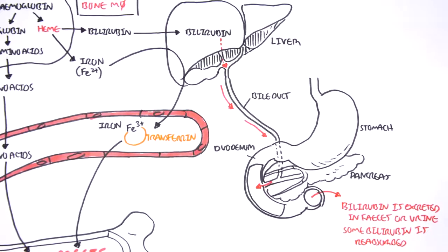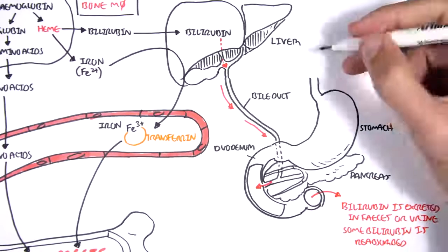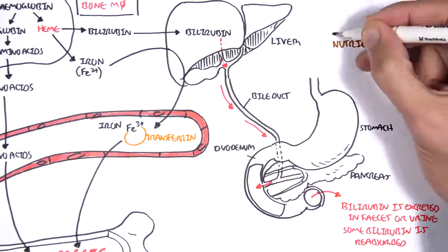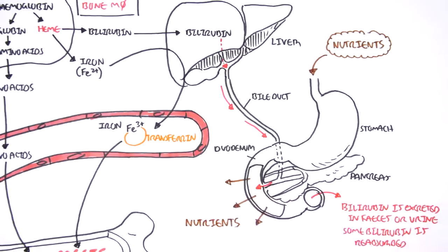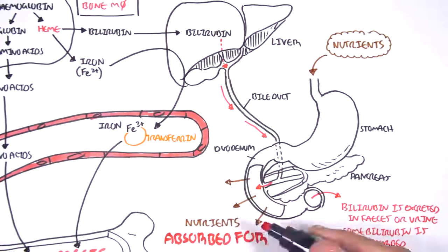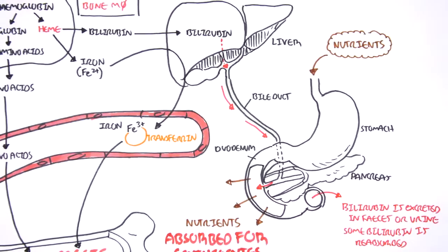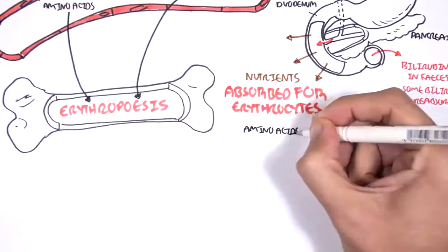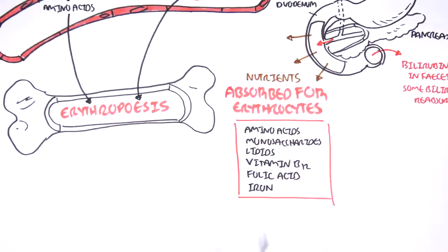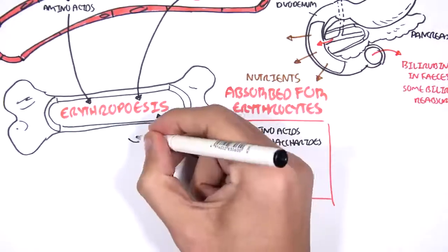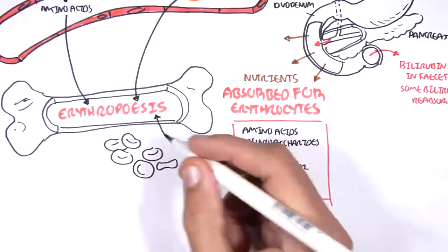Now that we're in this picture of the stomach and small intestine, it's important to note that when we eat nutrients, some of these nutrients are important in red blood cell production. They are absorbed in the small intestine. So, nutrients absorbed for erythropoiesis include amino acids, monosaccharides, lipids, vitamin B12, folic acid, and iron. And all these are used in erythropoiesis because we need these to make red blood cells.